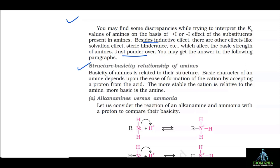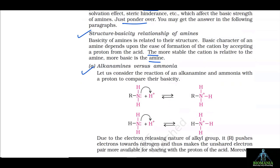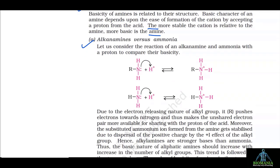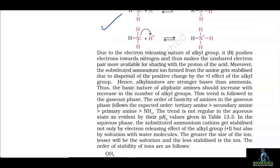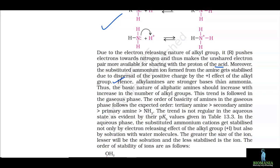Structure-basicity relationship of amines: basic character of an amine depends upon the ease of formation of a cation by accepting a proton from an acid. The more stable the cation relative to the amine, the more basic is the amine. Due to the electron-releasing nature of alkyl groups, the alkyl group pushes electrons towards nitrogen, making the unshared electron pair more available for sharing with a proton. Moreover, the substituted ammonium ion formed gets stabilized due to dispersal of positive charge by the +I effect of the alkyl group. Hence, alkyl amines are stronger bases than ammonia.